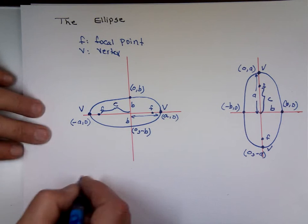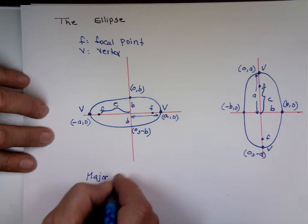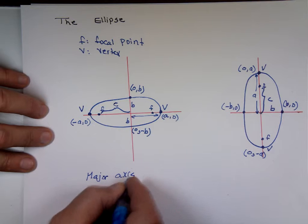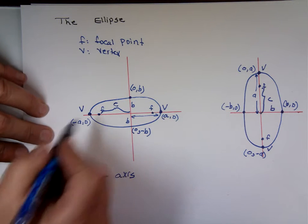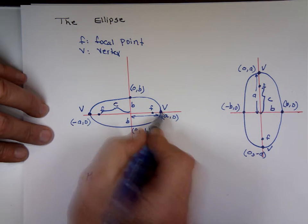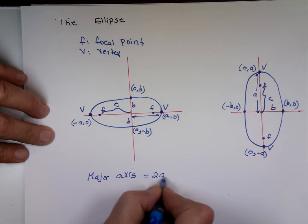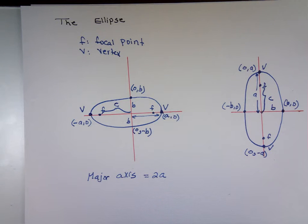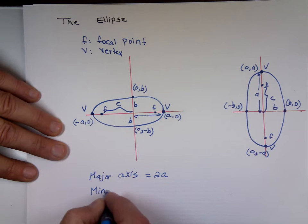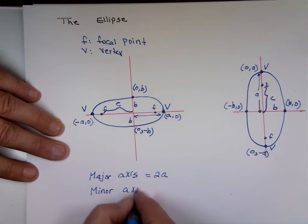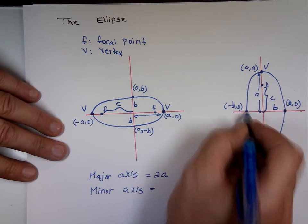Two more terms: major axis — that's the longer side, from this end to that end, and it has to be twice A. And the minor axis is the shorter side, from here to there — that's 2B.